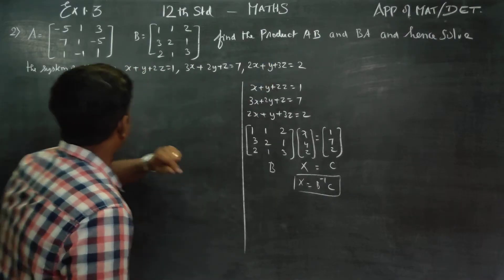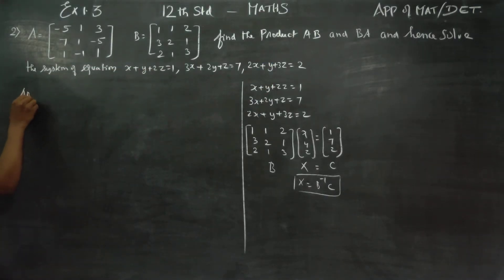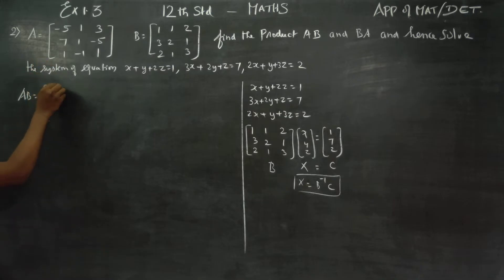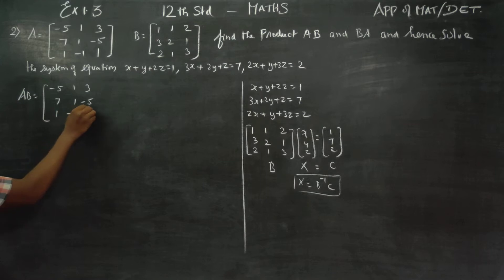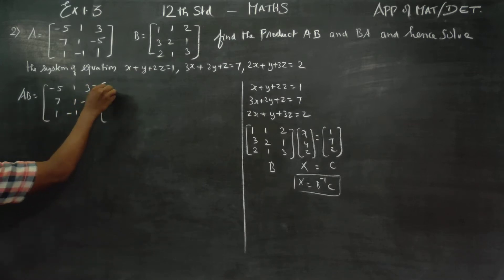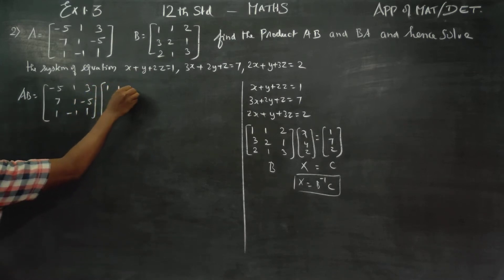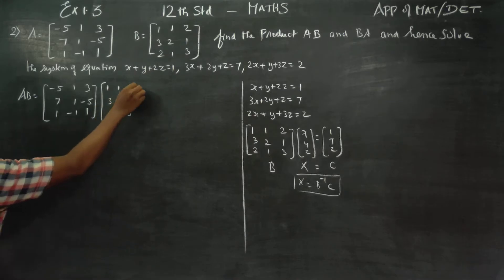We go for A into B. I am going to multiply A matrix with B matrix. A matrix is [-5, 1, 3; 7, 1, -5; 1, -1, 1]. With B matrix [1,1,2; 3,2,1; 2,1,3]. Row into column.